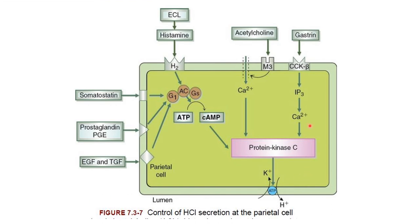Gastrin binds with the cholecystokinin-B receptor (gastrin receptor) on parietal cells. Once binding occurs, calcium channels open, releasing large amounts of intracellular calcium. This calcium, along with cyclic AMP, acts on protein kinase C, activating the proton pump and thus causing H⁺ secretion and normal acid production.